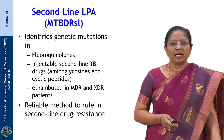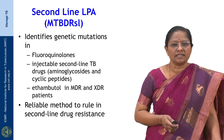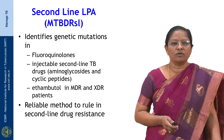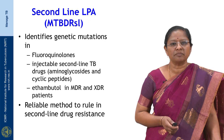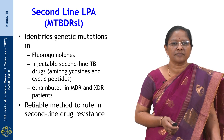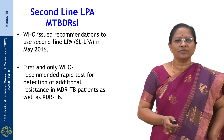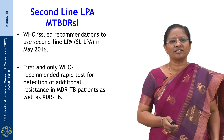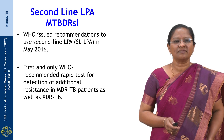Coming to the second-line Line Probe Assay called the MTB DR SL, recently approved by WHO, it identifies genetic mutations in fluoroquinolones, injectable second-line TB drugs — namely aminoglycosides and cyclic peptides — and also for ethambutol in MDR and XDR patients. This is a reliable method to rule in second-line drug resistance. WHO issued recommendations to use the second-line LPA in May 2016, making it the first and only WHO-recommended rapid test for detection of additional resistance in MDR TB and XDR TB patients.